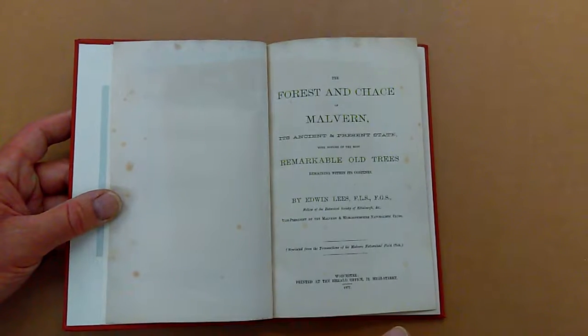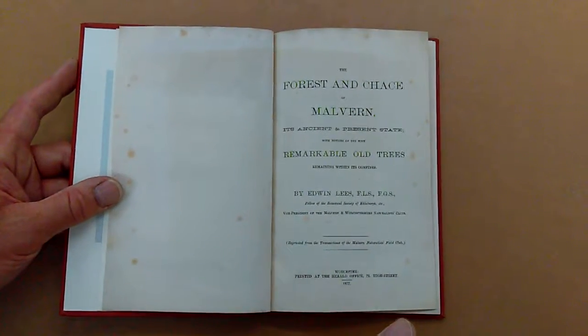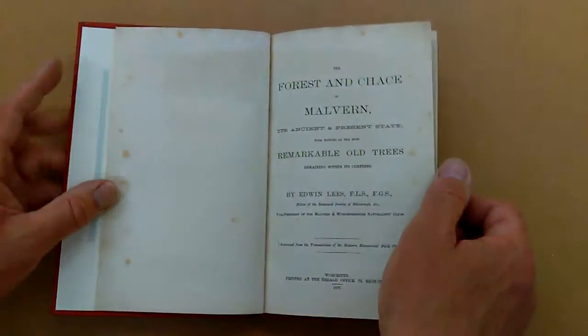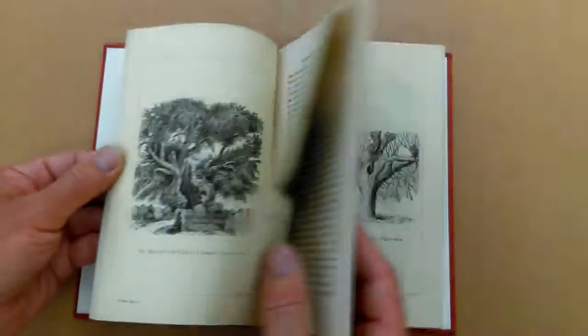But it's a charming 1877 book called The Forest and Chase of Malvern, Its Ancient and Present State, with notices of the most remarkable old trees remaining within its confines. And there it is, it's a book about the topography of Malvern Forest.